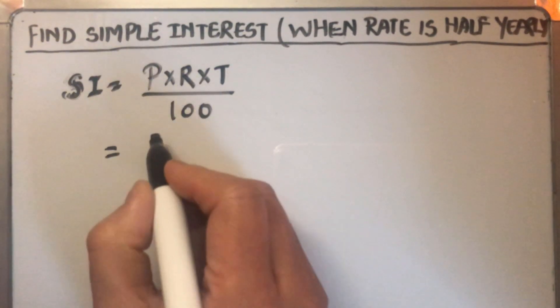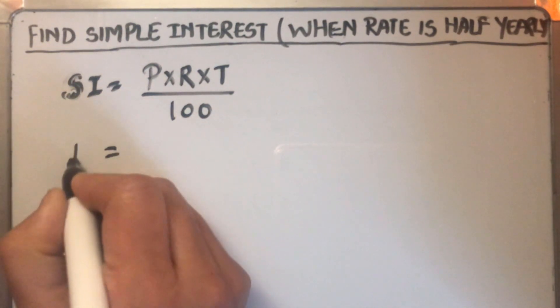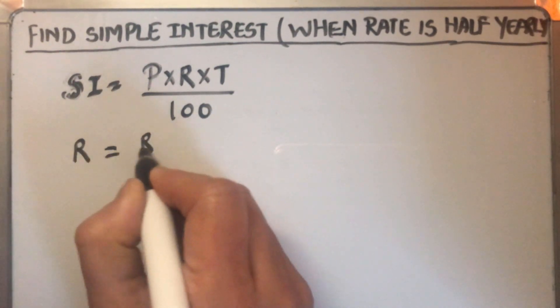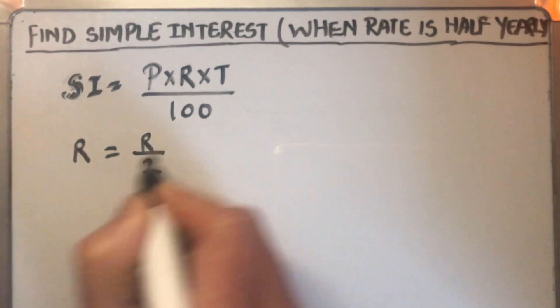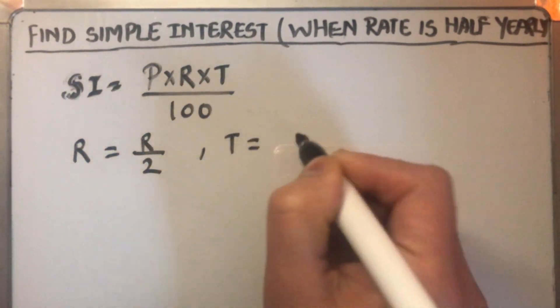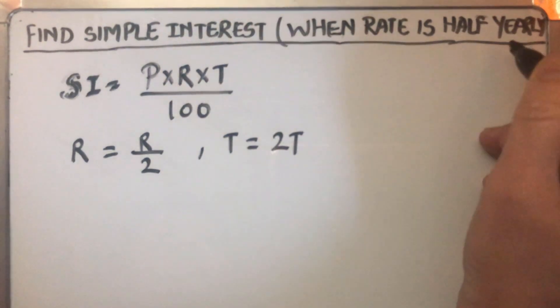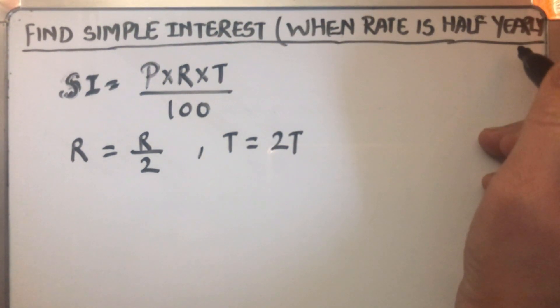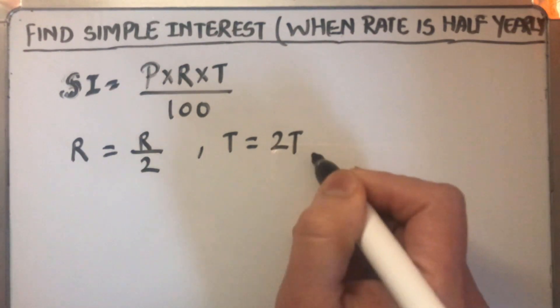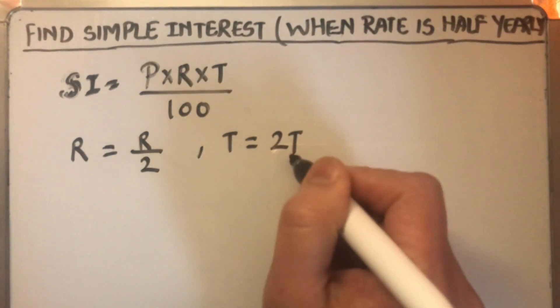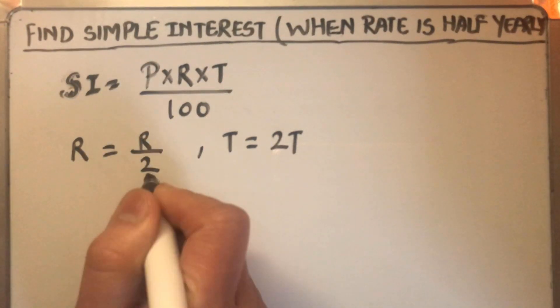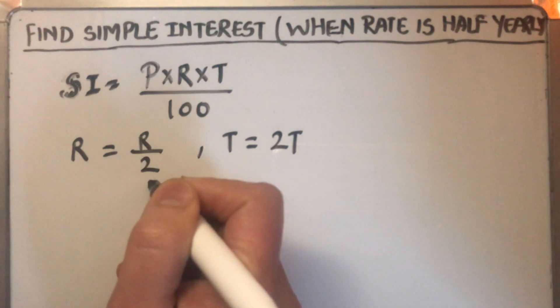So in this case when the rate of interest is charged half yearly, R will become R over 2 and the time period will become 2T because half T will be for every half year. So for one year there will be two half years, for two years there will be four half years. So our T will become 2T and the rate of interest whatever is given we have to divide it by 2.